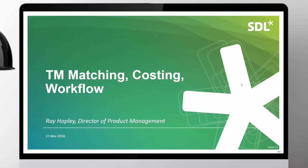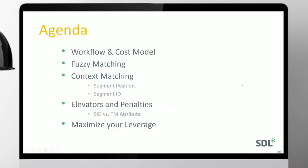I'm going to go through the agenda: talk about the types of matching you can get from TM and what they mean, a little bit of detail around how they're calculated, what that means for process management — the workflow piece — and how that always feeds into costing. I'll also talk about segment IDs versus TM attributes and how you can exploit these to maximize your leverage.